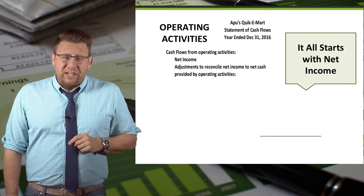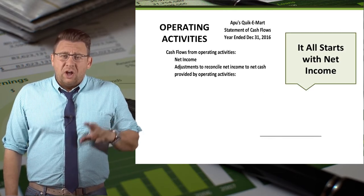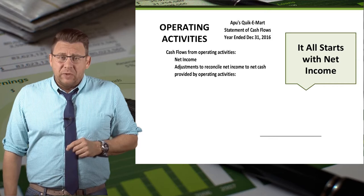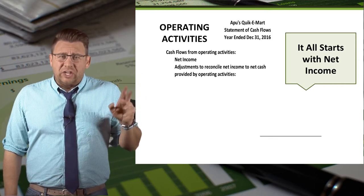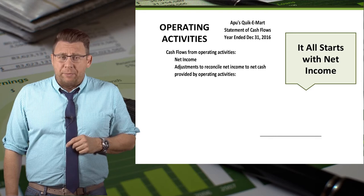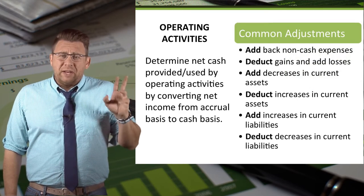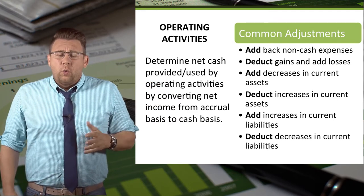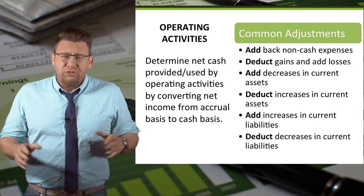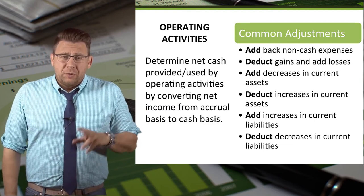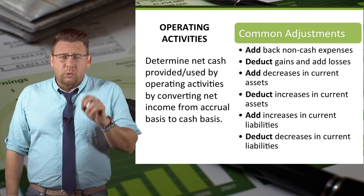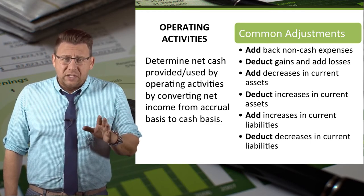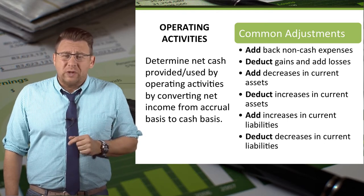The operating activities section of the statement of cash flows all starts with net income. We begin with accrual accounting net income and reconcile adjusting items to arrive at net cash from operating activities. The common adjustments include adding back non-cash items like depreciation expense. Depreciation expense has been deducted to arrive at net income, but since it's a non-cash expense, we want to add it back since cash wasn't reduced.